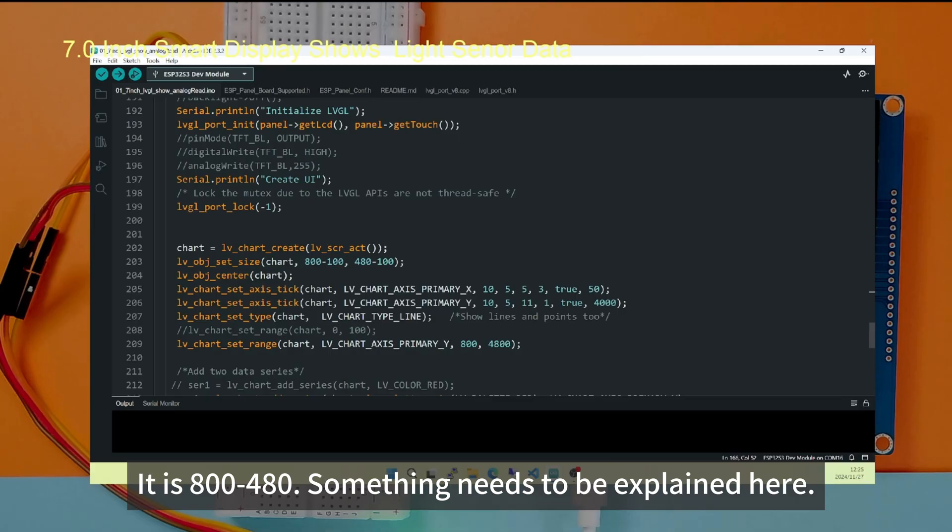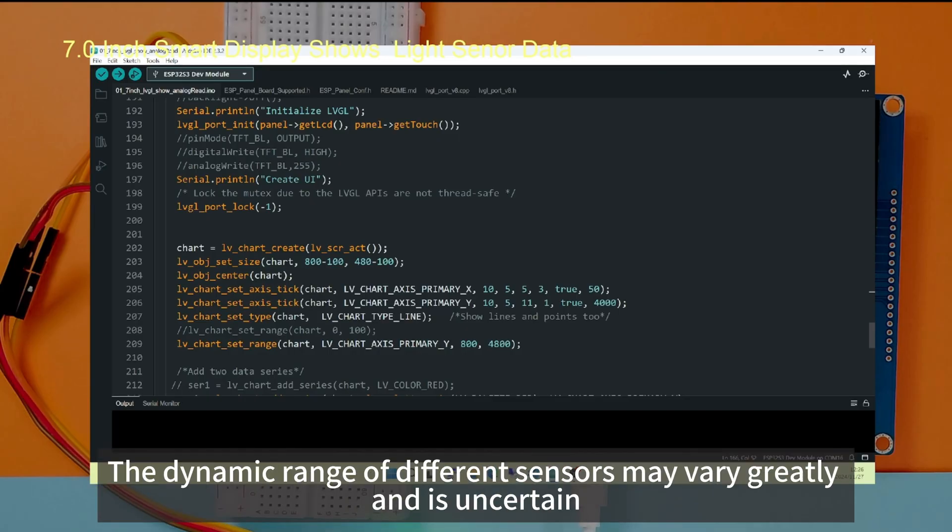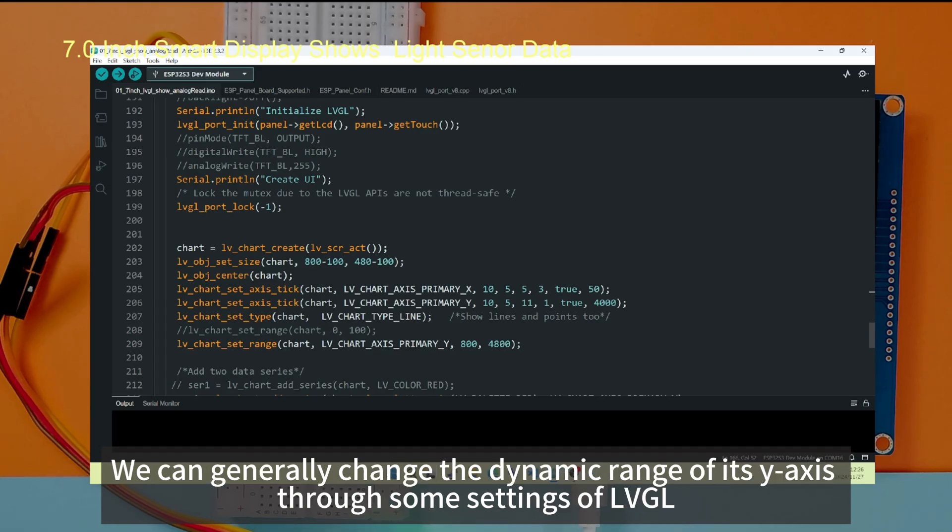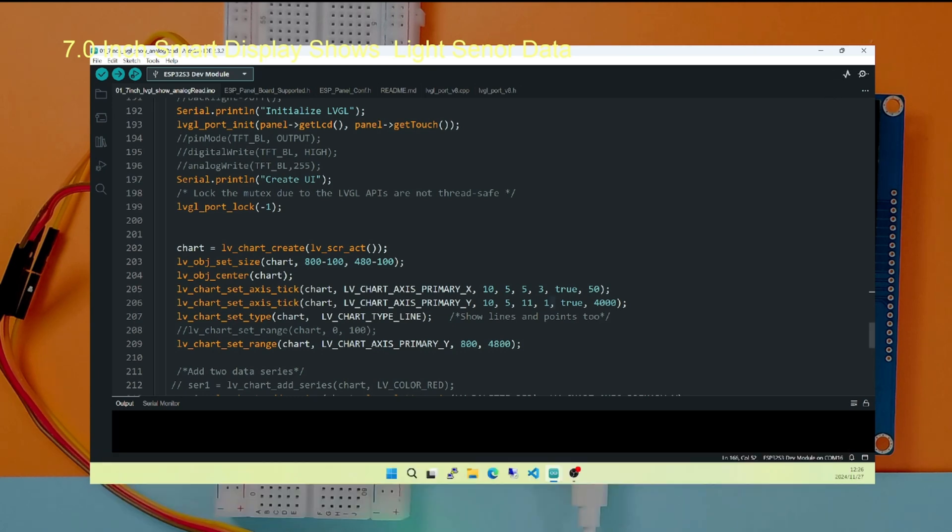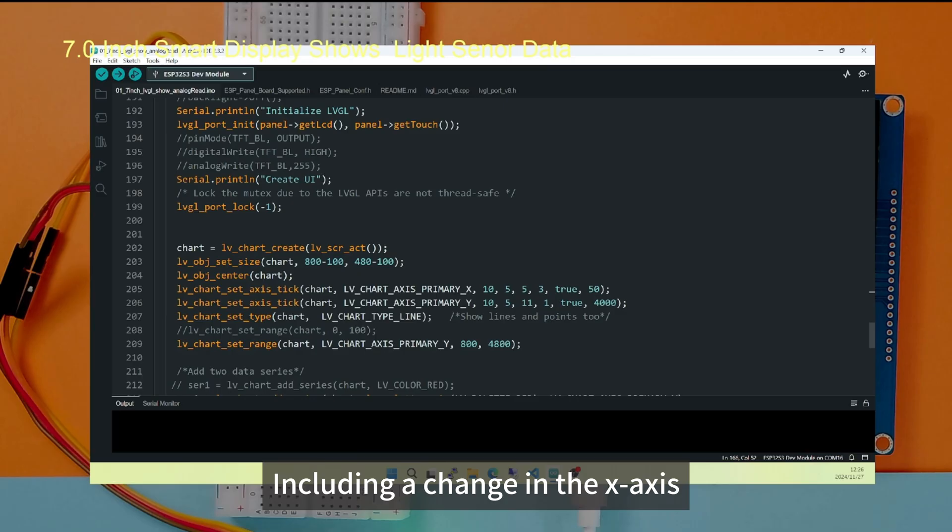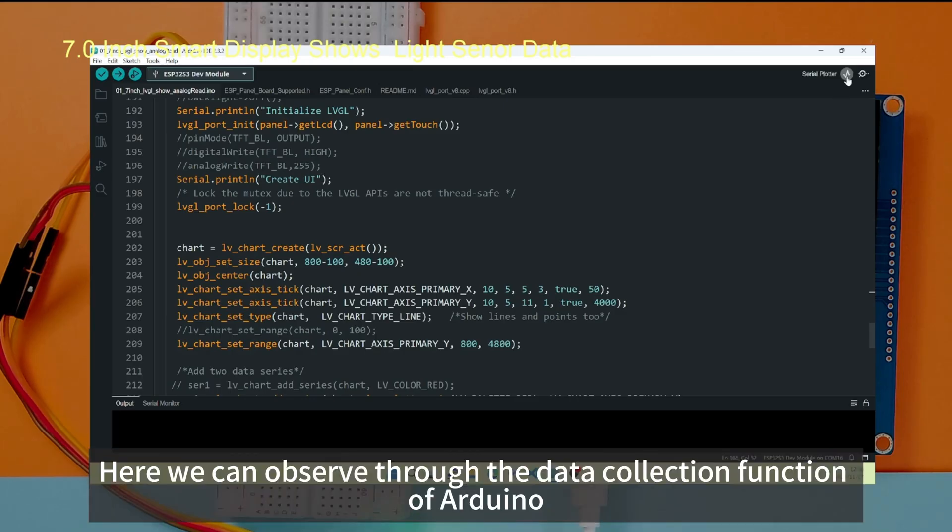Something needs to be explained here. The dynamic range of different sensors may vary greatly and is uncertain. We can generally change the dynamic range of its y-axis through some settings of LVGL. Including a change in the x-axis. Here we can observe through the data collection function of Arduino.